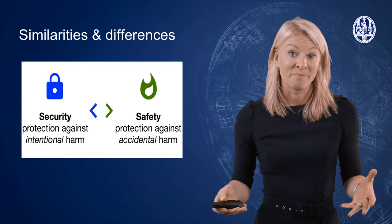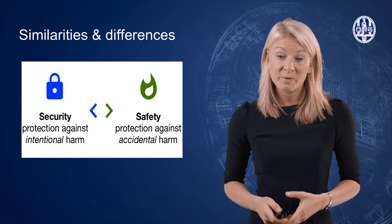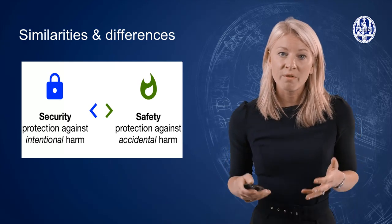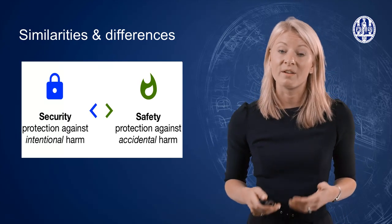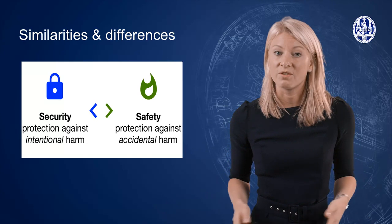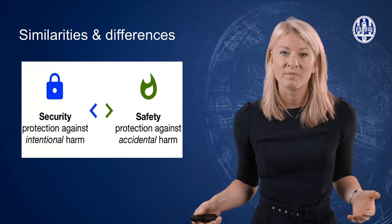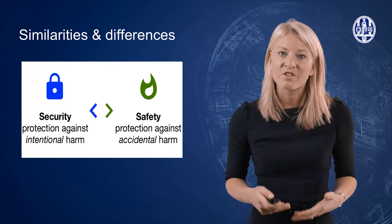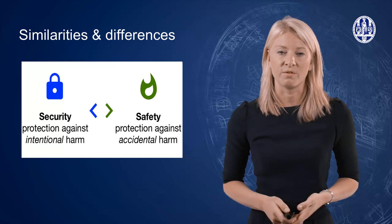Now let us take a closer look at the similarities and differences between safety and security. In essence, both concepts are about potential or actual harm to acquired values. These values can be just about anything, such as health, possessions, or cultural traditions. The main difference between safety and security lies in the nature of the threat: intentional versus non-intentional.